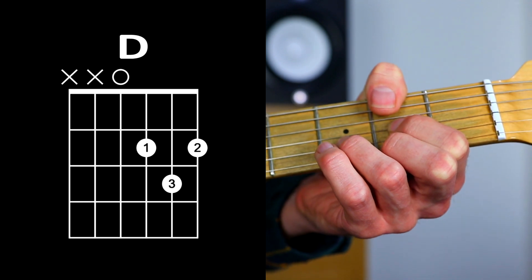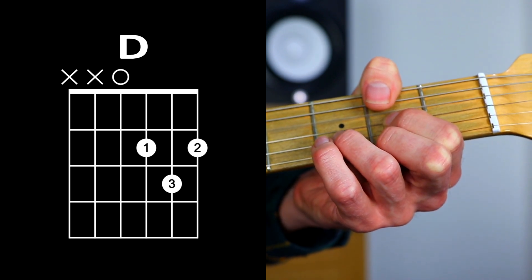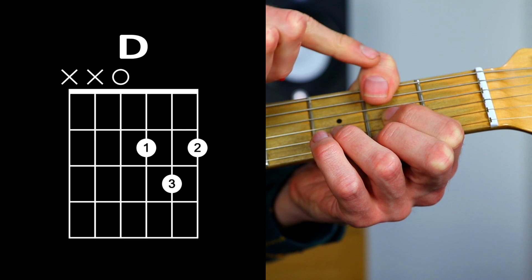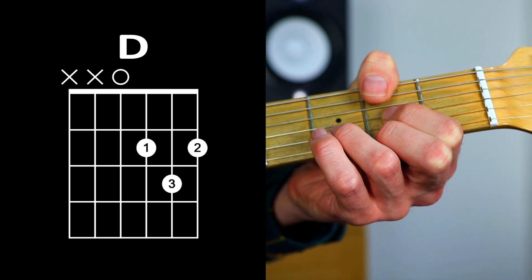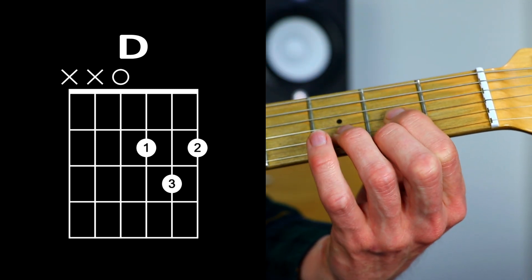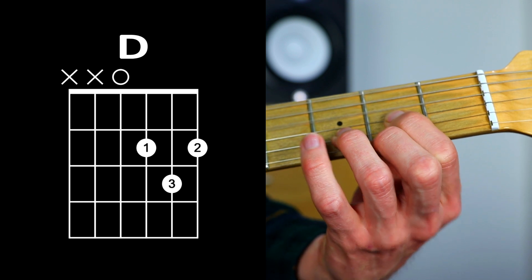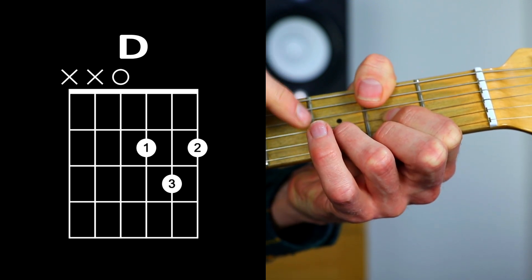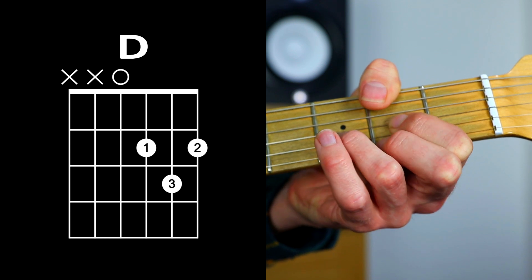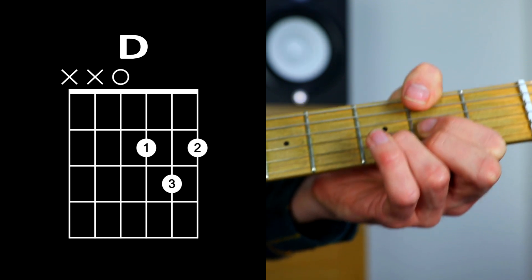When you're strumming a D chord, because that thumb is muting the low E and A, you're not getting a horrible muddy sound. When we stop those two bass notes, it sounds much better.